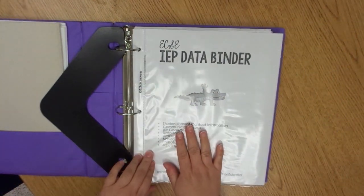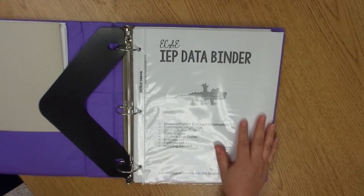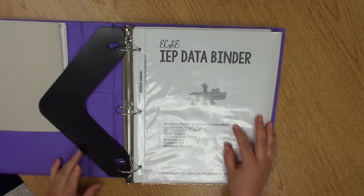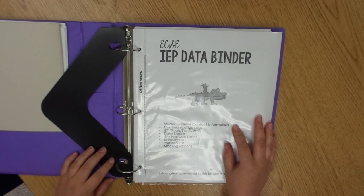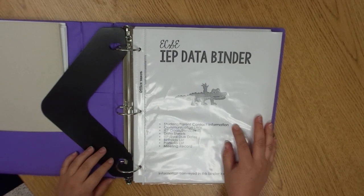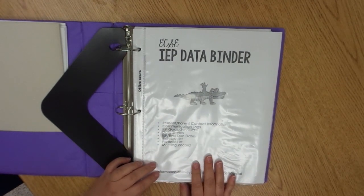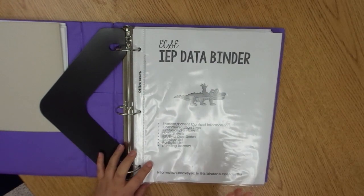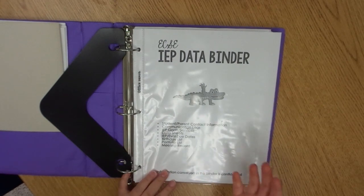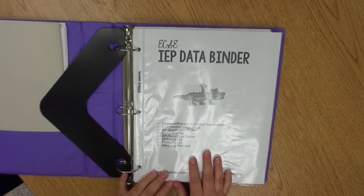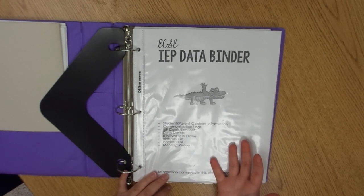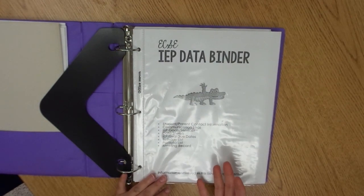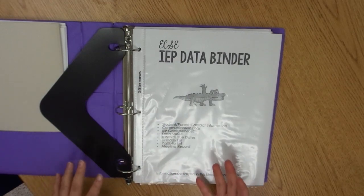Then on this side, sorry if there's a glare from the sheet protector, I just have my data binder and what I keep in here is student and parent contact information, my communication logs when I speak with their related service providers such as speech therapist, occupational therapist, or physical therapist. I also keep all of their IEP goals in here. I keep their service pages so I know how many minutes of each service they are supposed to receive. I keep all of their data sheets for their IEP goals.